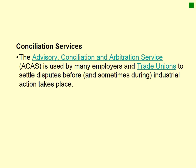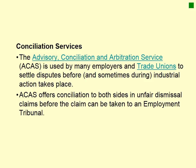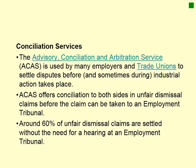Looking at conciliation services: ACAS, the Advisory Conciliation and Arbitration Service, is used when there is a dispute between employers and trade unions to settle disputes, ideally before industrial action takes place. For example, ACAS was used in the ongoing dispute between the government and junior doctors, who went on strike. ACAS offers conciliation to both sides in unfair dismissal claims before cases are taken to an employment tribunal, and around 60% of unfair dismissal claims are settled before needing to go to the employment tribunal.